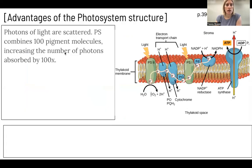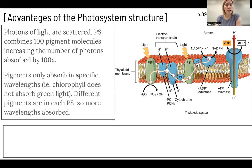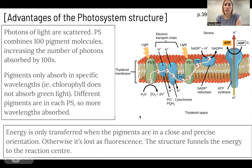The advantages of the photosystem structure are that photons of light are scattered, and because these photosystems have hundreds of different pigment molecules, that increases the number of photons absorbed by about a hundred times, since these pigment molecules absorb at specific wavelengths. If we have a wide range of pigments, we can absorb at a wide range of wavelengths. Chlorophyll does not absorb green light, so if we have different pigments that do absorb at green wavelengths — such as xanthocyanin — then more wavelengths of light are absorbed. Energy is only transferred when pigments are close and precisely oriented; otherwise that results in fluorescence.